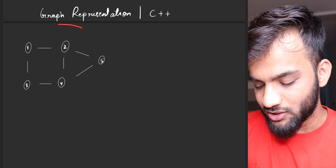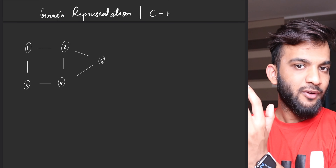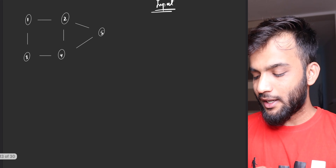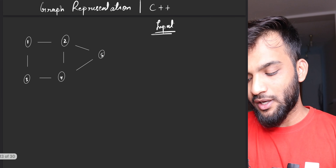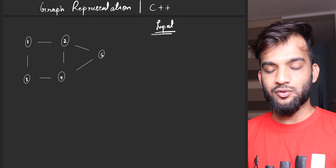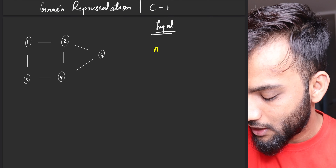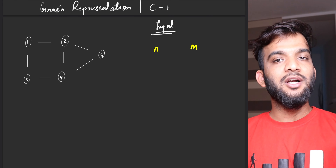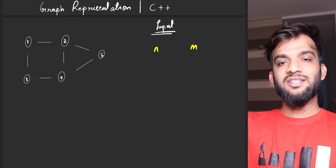Imagine this is the particular graph given to you. There will be two portions — first is the input, and next is how do you store it. In all questions, they will tell you: given n and m. They'll also tell you whether the graph is a directed one or an undirected one.